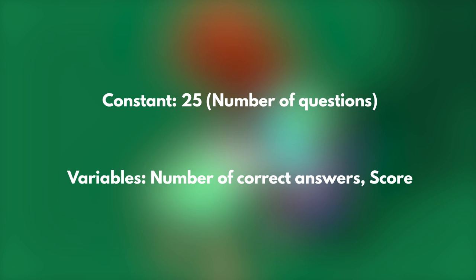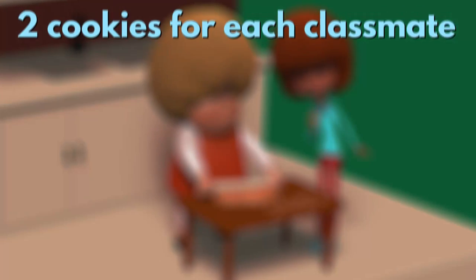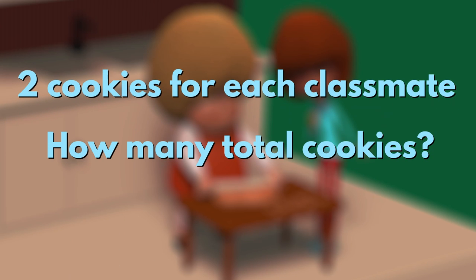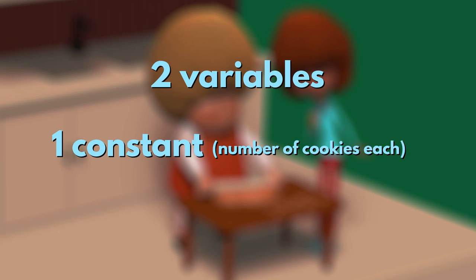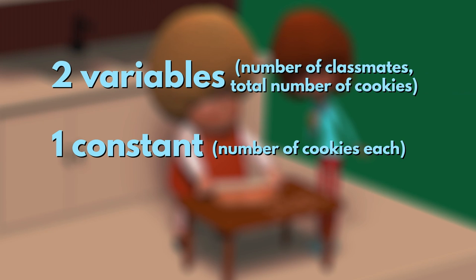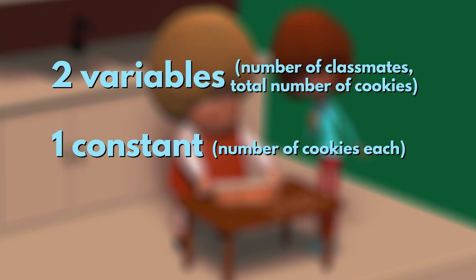Let's look at another example. Anna and her brother Alex are now baking cookies for their class — two cookies for each classmate. How many cookies do they need to bake? Here we have again two variables and one constant. The constant is the number of cookies each classmate gets: 2. The variables are how many classmates they have and the number of cookies they need to bake. We have to think which variable depends upon the other. The number of classmates determines the number of cookies they need to bake. That means the number of cookies is the dependent variable and the number of classmates is the independent variable.